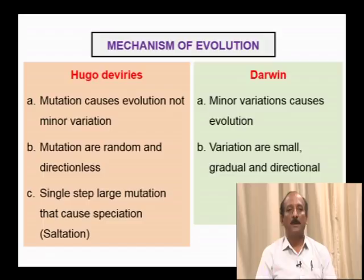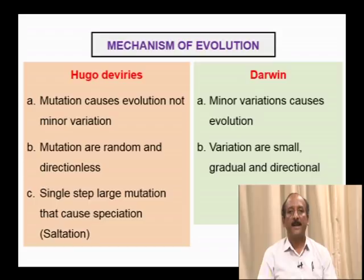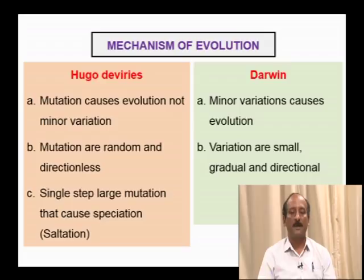Coming to the mechanism of evolution, Hugo de Vries proposed a mutation theory. According to Hugo de Vries, mutation causes evolution, involving large mutations; whereas Darwin believed minor, gradual, directional variations cause evolution. Mutations are random and directionless according to Hugo de Vries. He proposed that a single step of large mutation causes speciation, also called saltation.